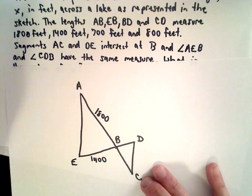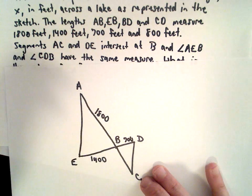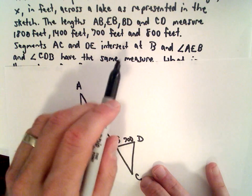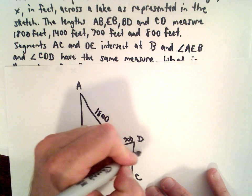...BD is 700 feet, so that's 700, and we're also given that CD is 800 feet.